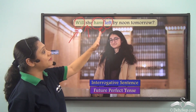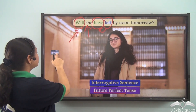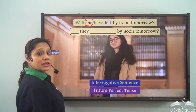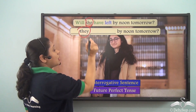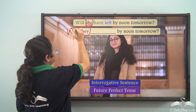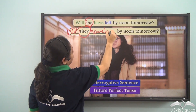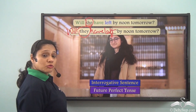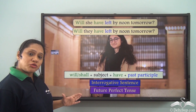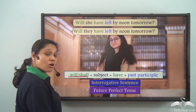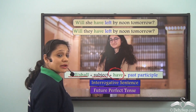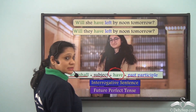We can see it says: Will she have left by noon tomorrow? If we change the subject to 'they', we will write: Will they have left by noon tomorrow? So interrogative sentences portraying this tense have the form 'will' or 'shall' followed by the subject, followed by the auxiliary verb 'have', and then the past participle.